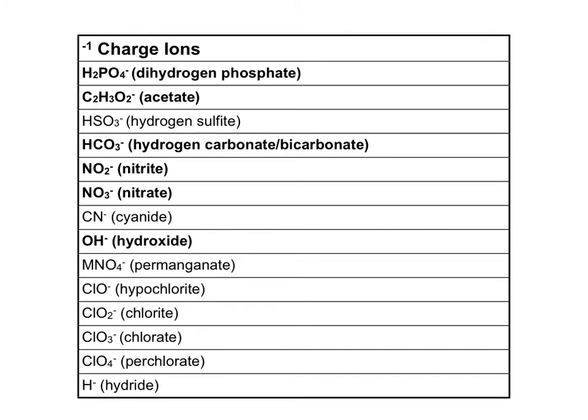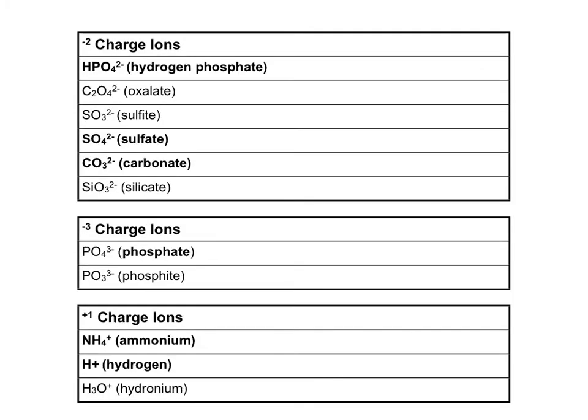These are the polyatomic ions that you should know for biology — all of those in bold — the same list you learned in 9th grade. There are more polyatomics that you need to be able to identify for this class as well.